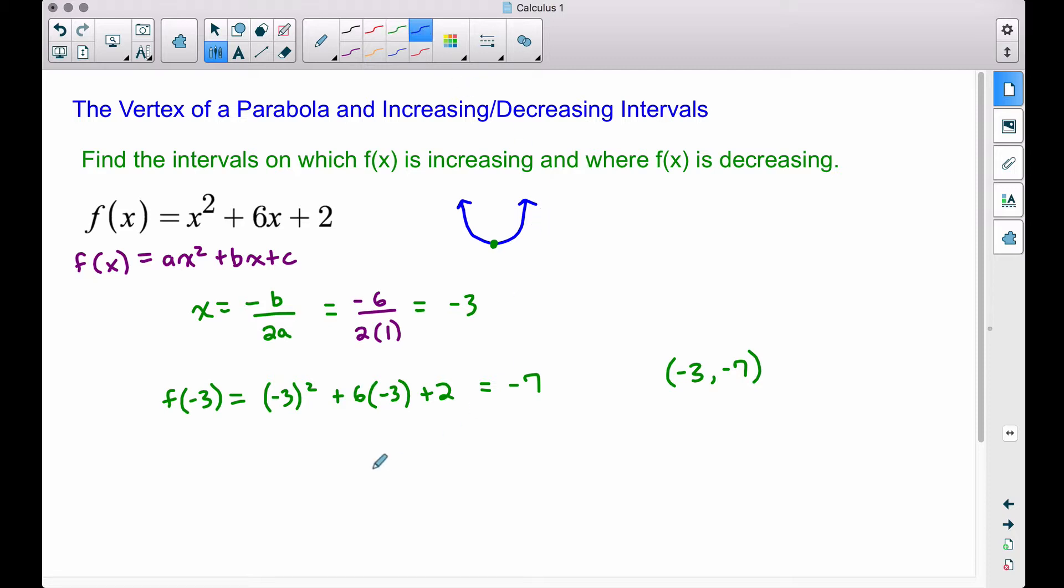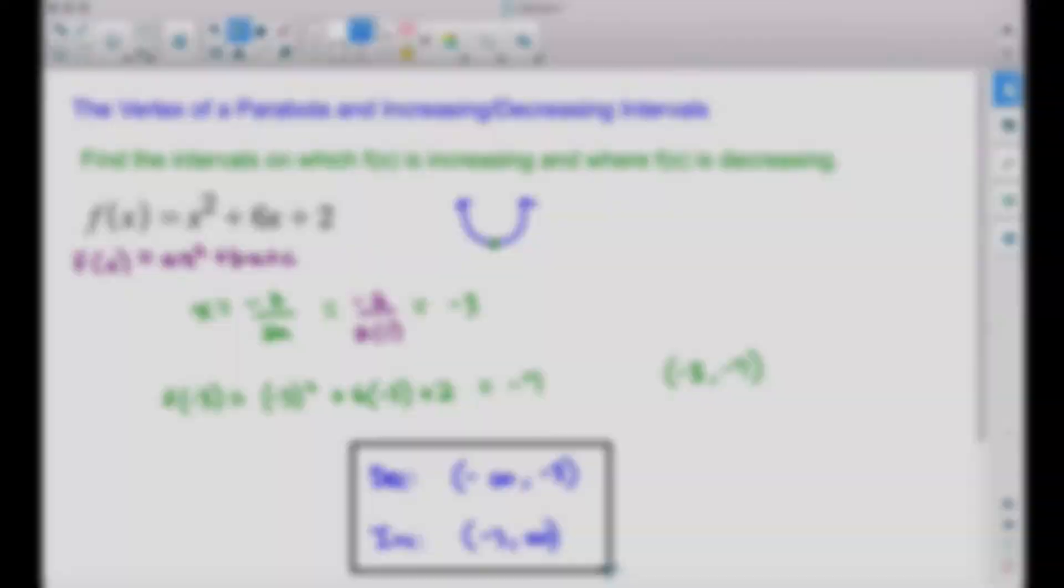For our intervals of increasing and decreasing, we are decreasing on the left side of this vertex, so therefore values of x from negative infinity to -3, this is where we're decreasing. We are increasing on values of x from -3 to positive infinity. Recall when you talk about intervals, you do use values of x when we talk about intervals of increasing and decreasing.